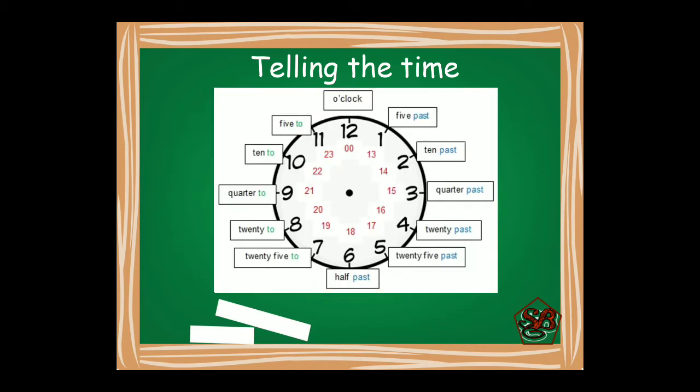This picture will make things more clear to you. When it is at 12, that is exactly at 60 minutes, we use o'clock. When it is 5 minutes we use 5 past, 10 past, quarter past, 20 past, 25 past, half past.